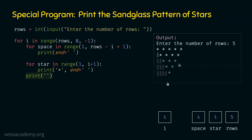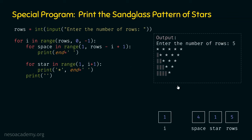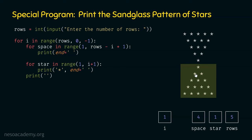We have got the first half of the sand glass pattern correctly. Now we need to print the second half. This second half is a full pyramid of stars — one star in the first row, increasing up to five in the last row. We already know how to print this pattern. Let's write the program for the second part of the sand glass pattern.